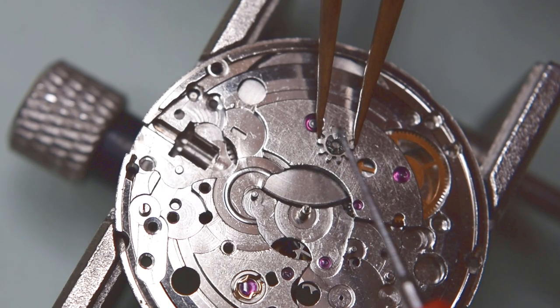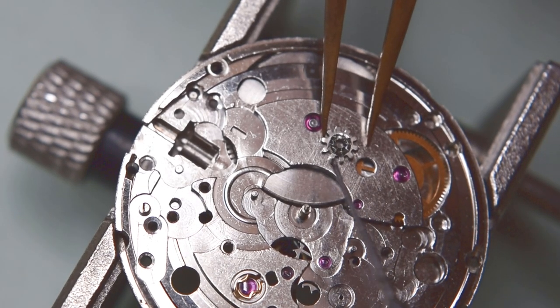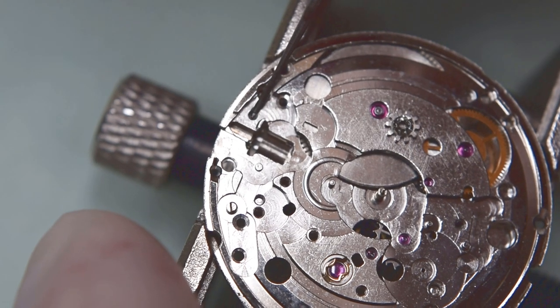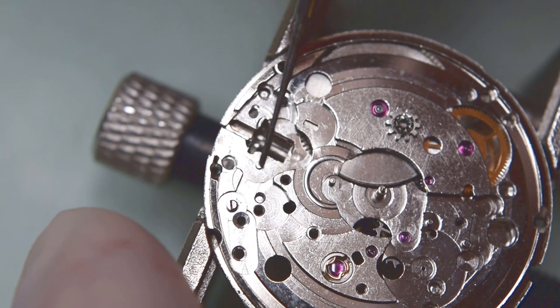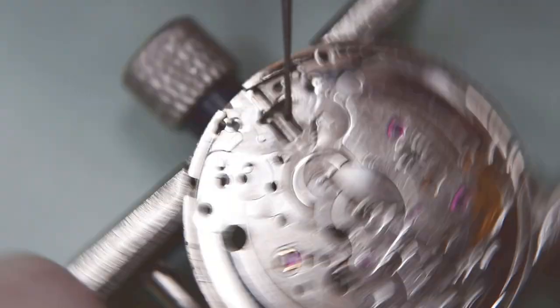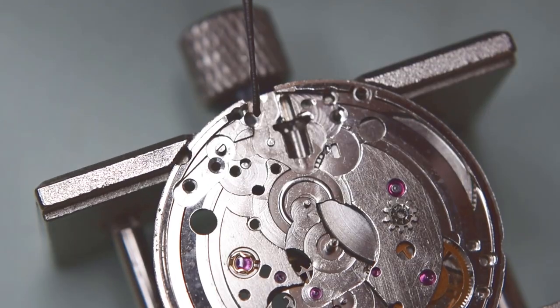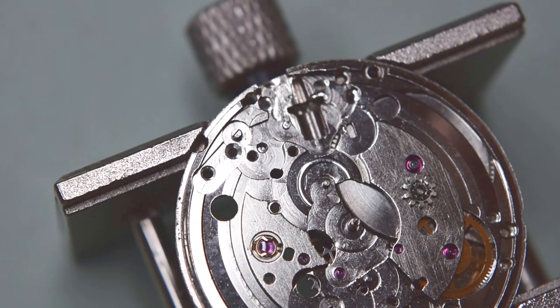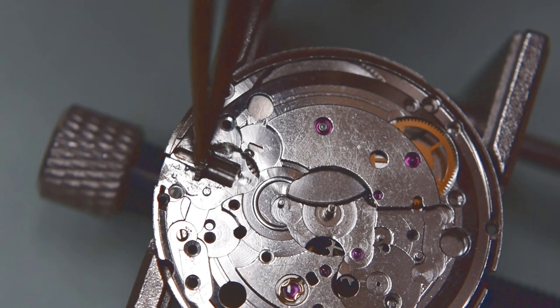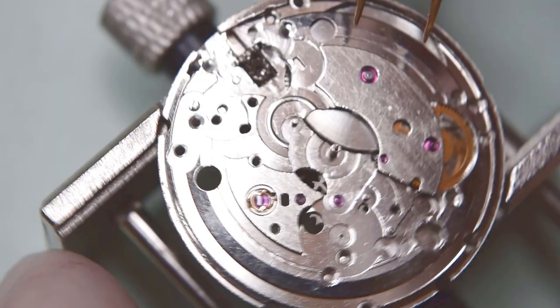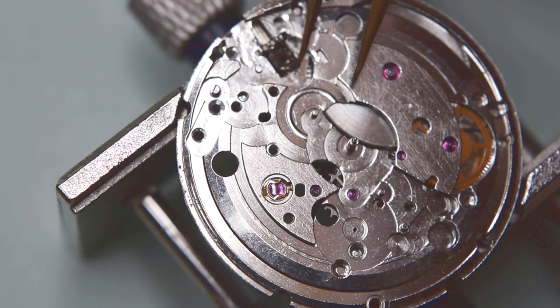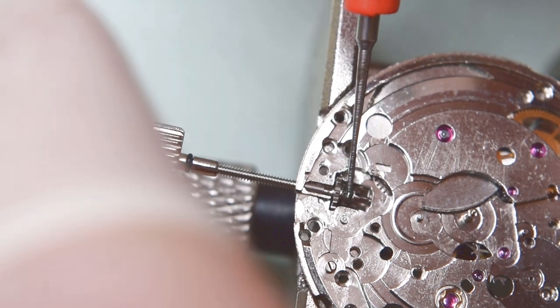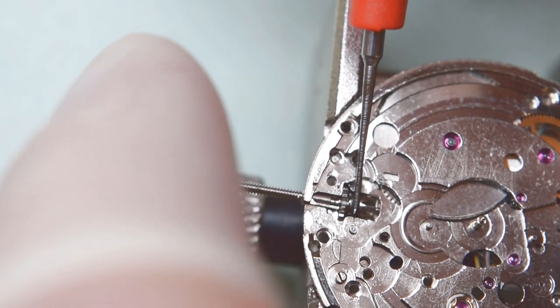What's left is the keyless work, the pallet fork, and of course the balance. A little bit of lubrication and let's go. Very small parts here, comparing for example with the Soviet watches. These ones are very tiny. They do their job.